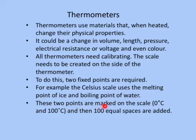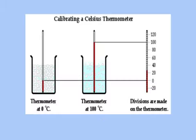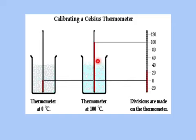These two points are marked on the scale. One is 0 degrees C, one is 100 degrees C, and then 100 equal spaces are added. To calibrate a Celsius thermometer, first they put a thermometer in ice and mark that mercury level, which equates to 0 degrees C. Then they put it in boiling water, the mercury level rises, and they mark this point for 100 degrees C. Then the space between the two points is divided up into 100 even divisions.